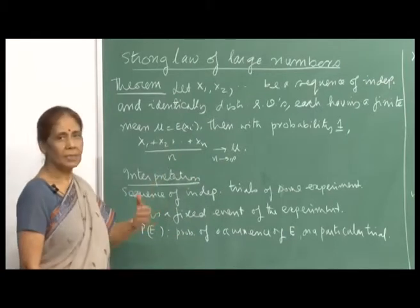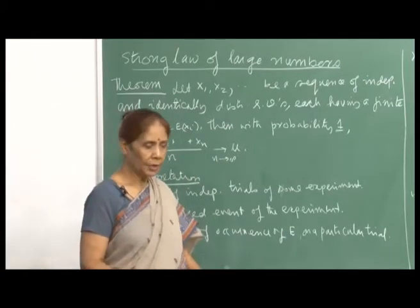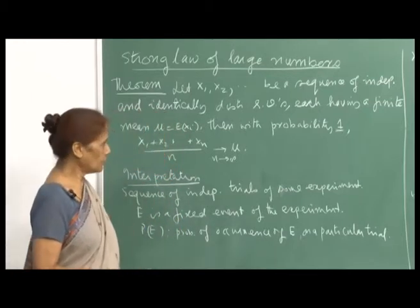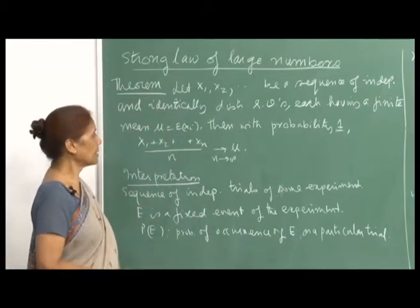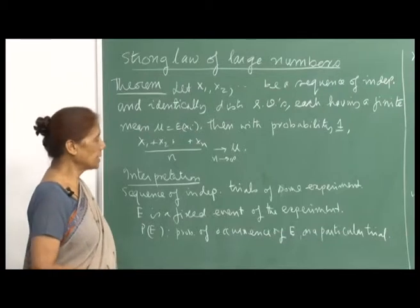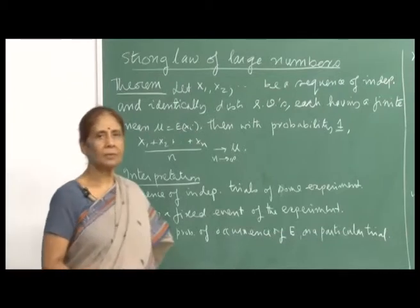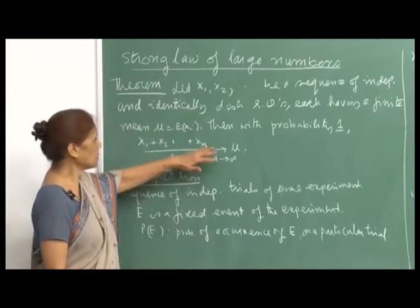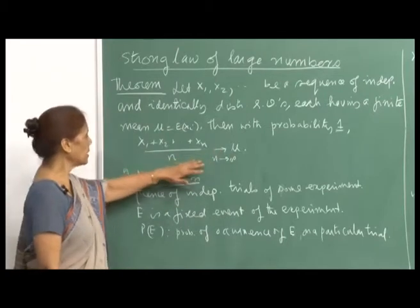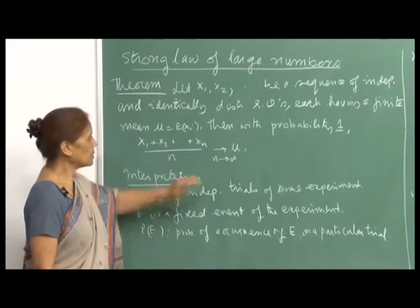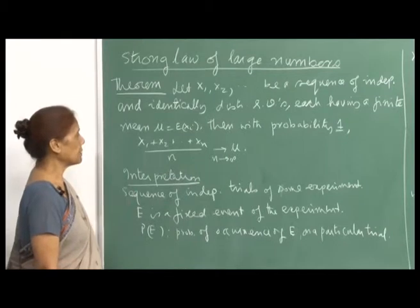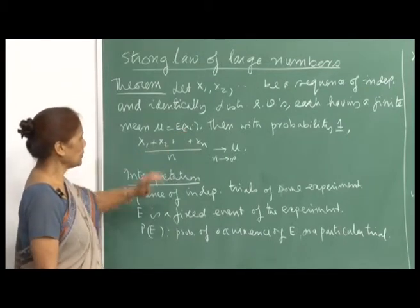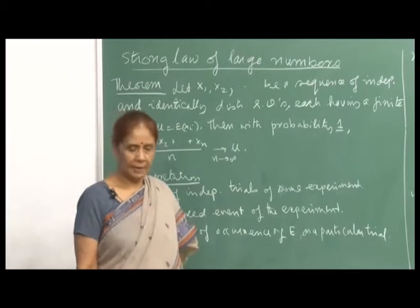This is a sure event. You can immediately see the difference from the weak law of large numbers — there we said that x_bar_n converges to mu in probability. Here we are saying that with probability 1, x_bar_n will converge to mu. This is a sure event, provided the expectation of each x_i is finite.